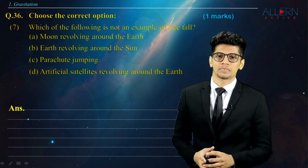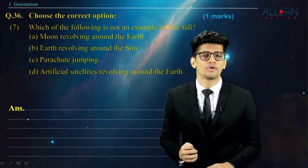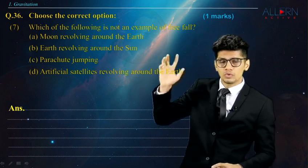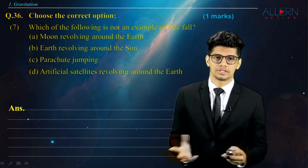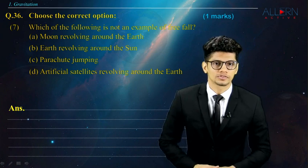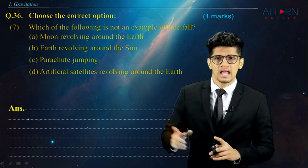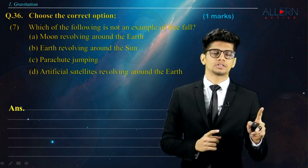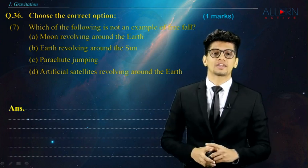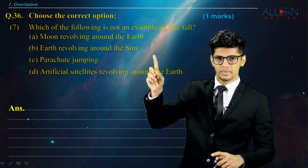Next question. Which of the following is not an example of a free fall? Now, moon revolving around the earth. We know that in a free fall, there is only one force, that is gravitational force, and there is no air resistance. Now, moon, when it revolves around the earth, it is falling freely around the earth in the presence of vacuum. That means there is no air resistance. That means this is a free fall.